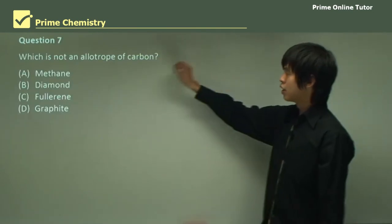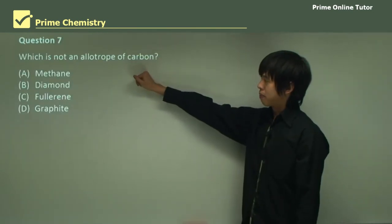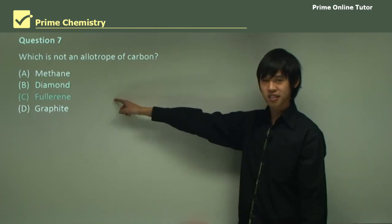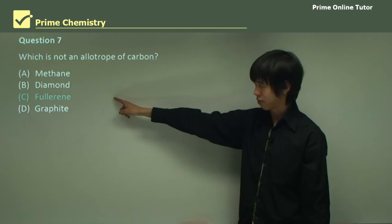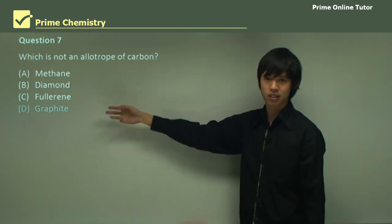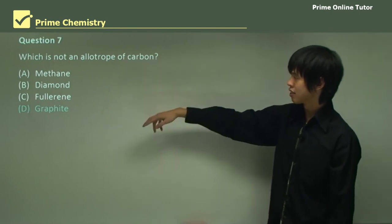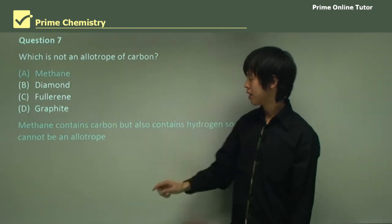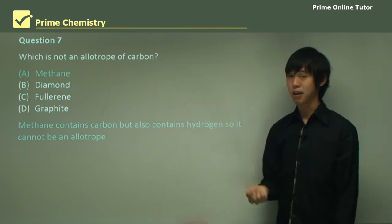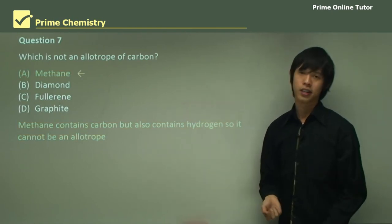So first, which is not an allotrope of carbon? We have diamond, which of course is an allotrope of carbon. Fullerenes, again, we know that this is an allotrope of carbon. And graphite, which again we know is also an allotrope of carbon. So what we're left with is methane. Methane contains carbon but also hydrogen, so it can't be an allotrope, so that must be the correct answer.